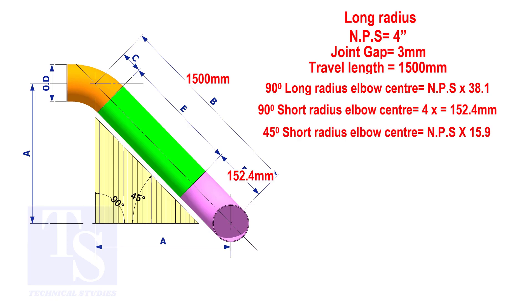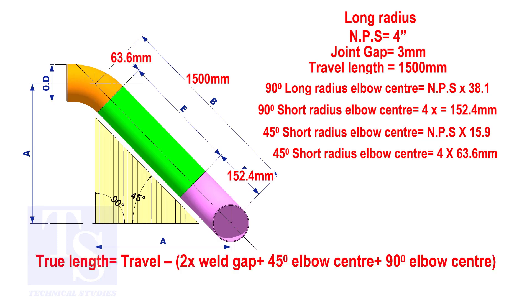To calculate the elbow center of a 45 degree long radius elbow, multiply the nominal pipe size by 15.9. The answer is 63.6 millimeters. Apply the calculation. The true length of the pipe is 1,278 millimeters.